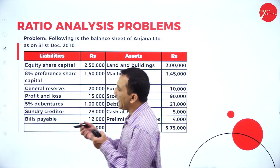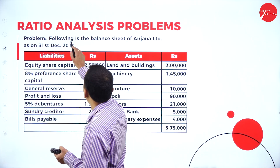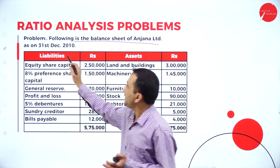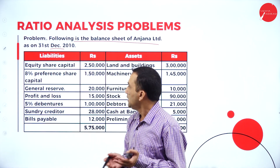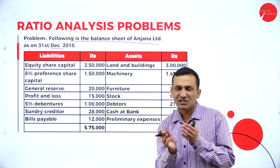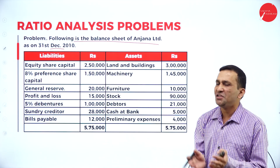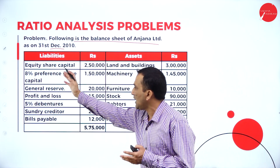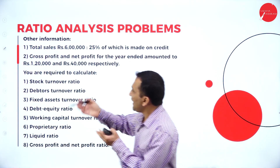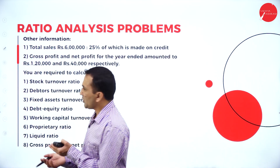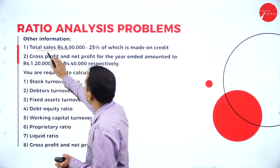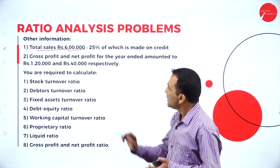Moving to the next question: the following is the balance sheet of Anjana Limited as on 31st December 2010. The balance sheet — the position statement — is given with asset side and liability side. Other information is also given as adjustments: total sales is 6 lakh.